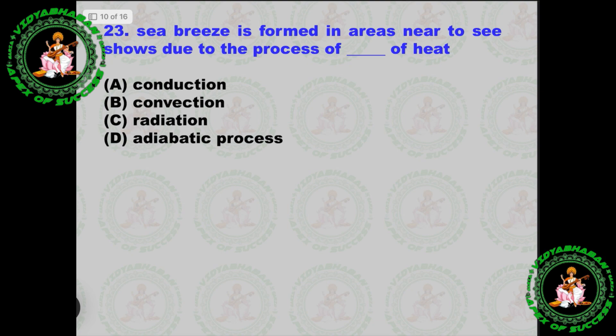Next question: Sea breeze is formed in areas near the sea. This occurs due to the process of convection of heat.